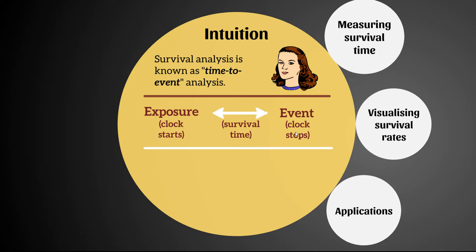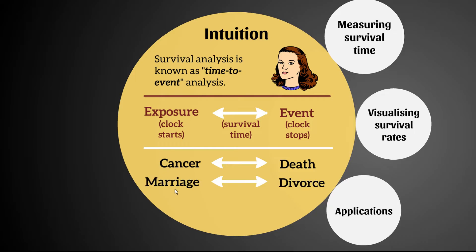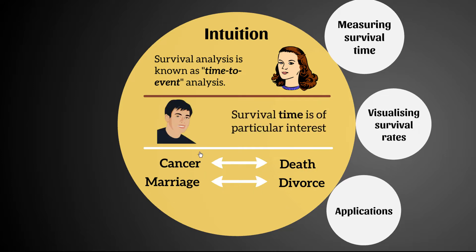The event doesn't always have to be death, though it often can be. A typical example is cancer diagnosis as the exposure, assessing how long it takes someone to die — or put more positively, how long they typically survive from diagnosis. We can also look at divorce rates, where marriage is the exposure and divorce is the event, assessing the survival time of the marriage. It applies equally to health, social institutions, or even company survival after a stock market shock.